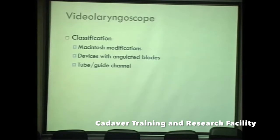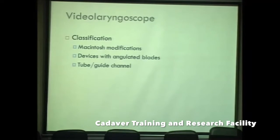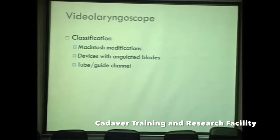Modern video laryngoscopes are classified into three categories. The first is standard Macintosh modifications, where a video camera is incorporated into the familiar Macintosh blade — for example, the CMAC and C-McGrath MAC. The second category is devices with angulated blades, such as the Glidescope, which have a prefixed angle for improved alignment. The third category is tube or guide-channel video laryngoscopes.